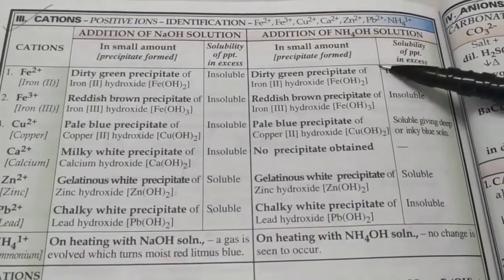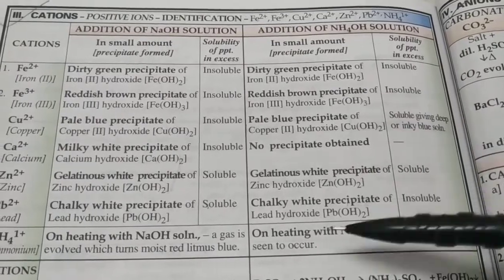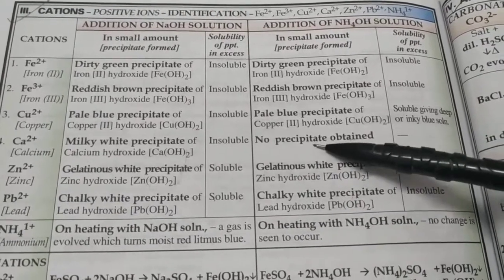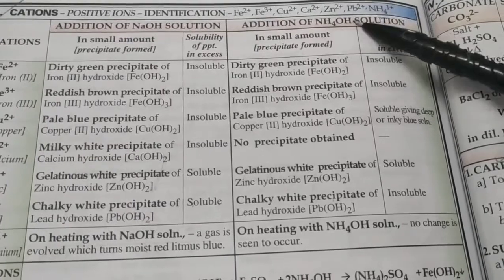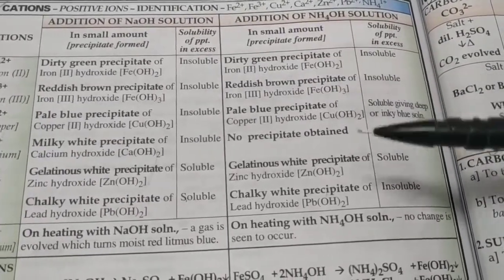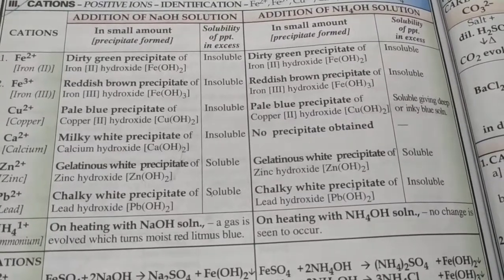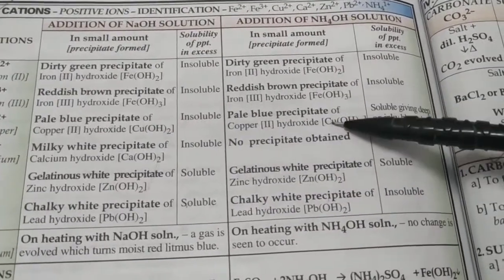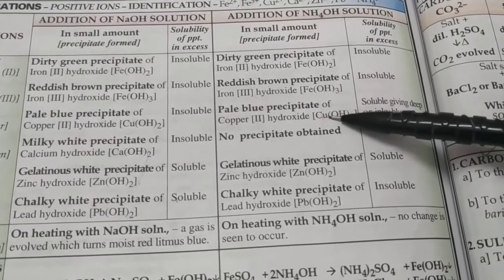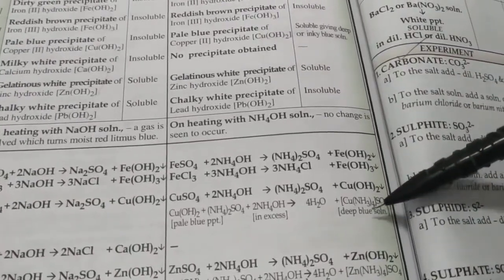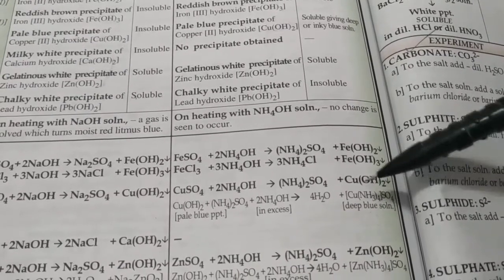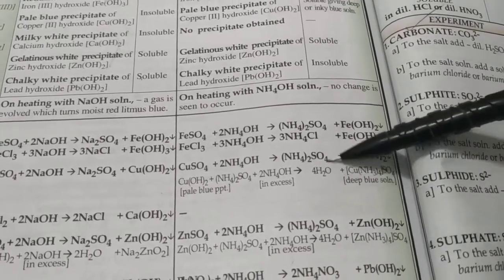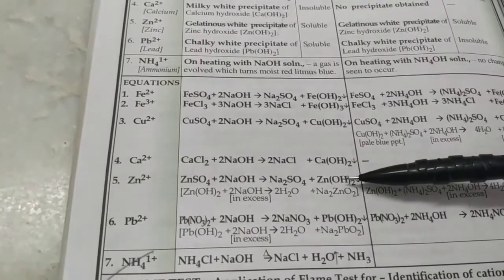When using ammonium hydroxide to identify cations, most observations match those with NaOH, with a few key differences. Calcium salts give no precipitate with NH4OH since it is a weaker alkali. Copper salts give a blue precipitate that dissolves in excess NH4OH to give an inky blue solution of tetramine copper sulfate. So with NH4OH, soluble complex salts form with copper and zinc, whereas with NaOH, soluble salts form with zinc and lead.